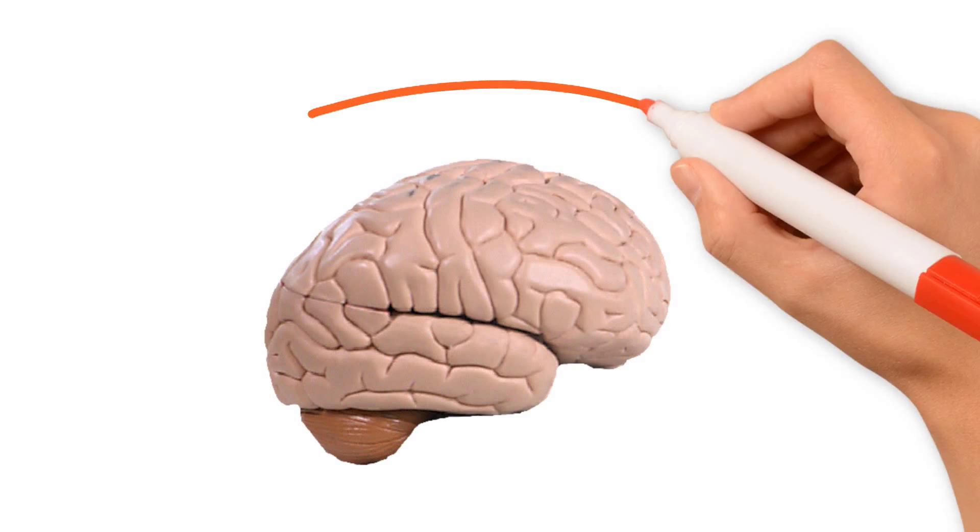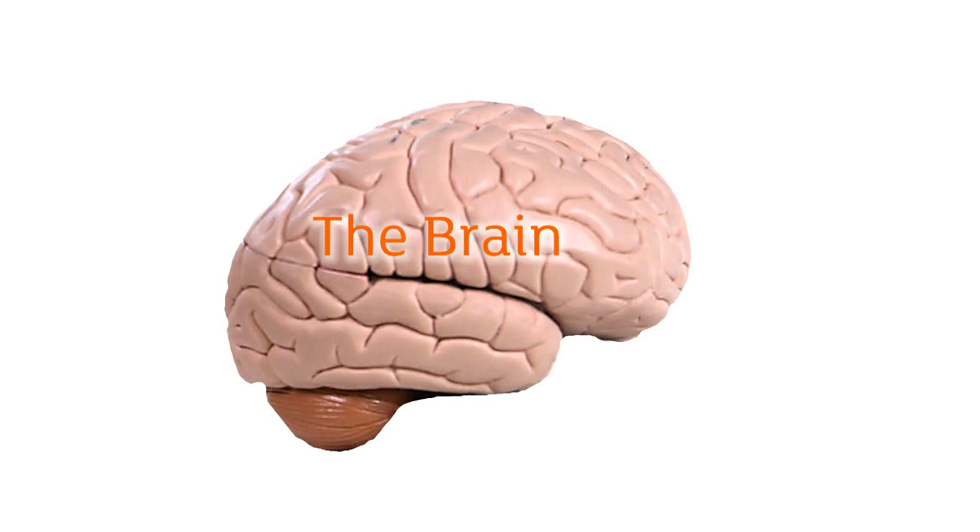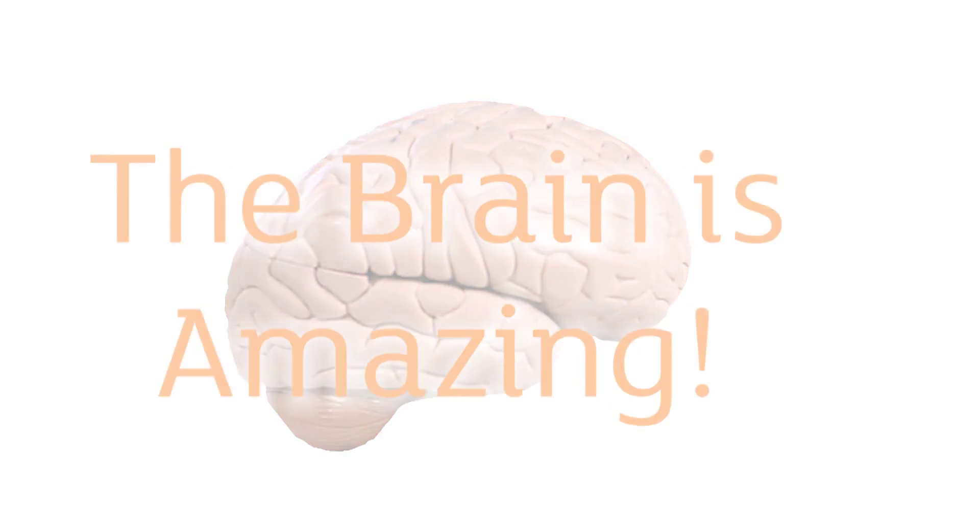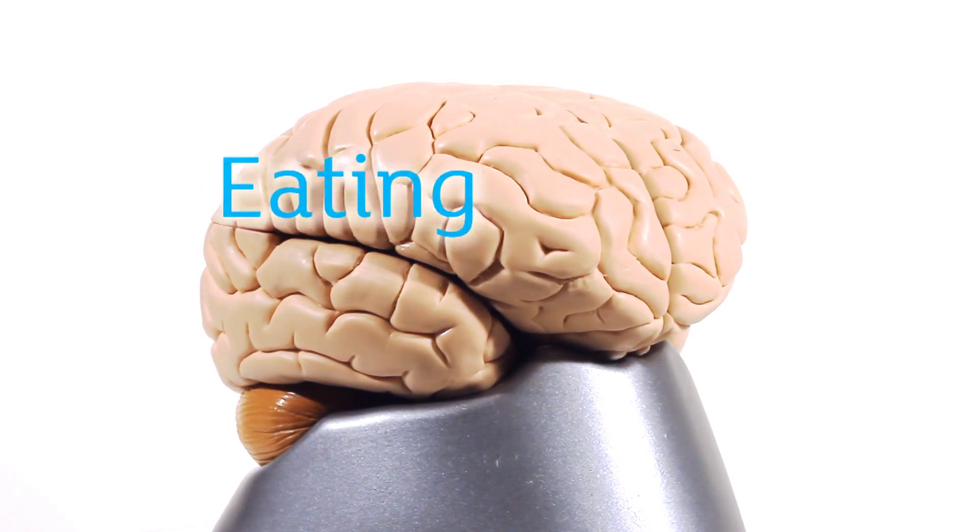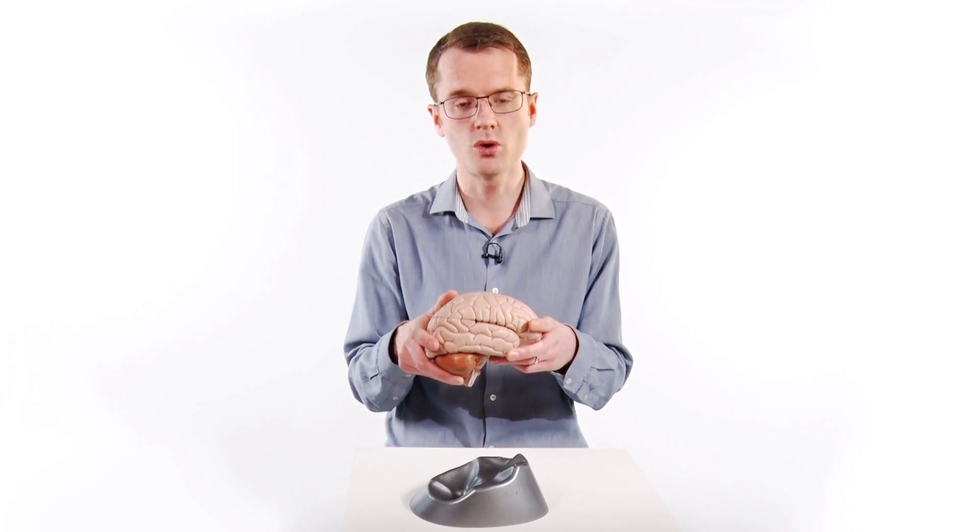Now this is a full-size brain, so from front to back, it's about 18 centimeters, and it's about 8 centimeters from side to side. The brain is amazing. It's in charge of everything that we do, whether we're eating, sleeping, breathing. The brain is in charge of all those things.